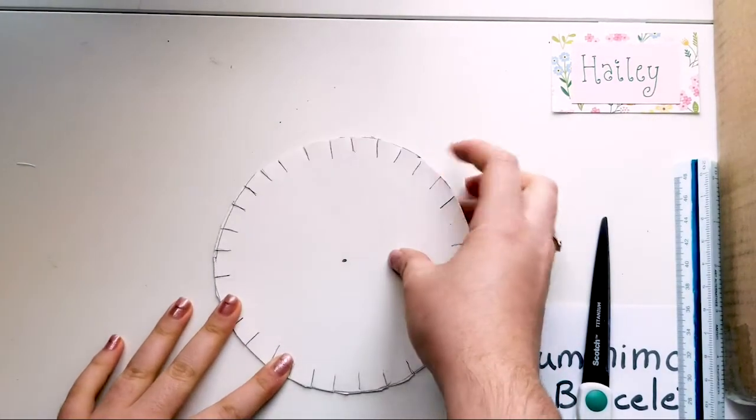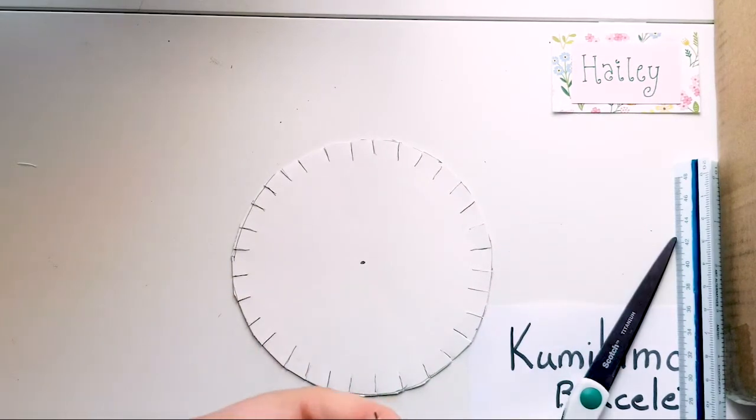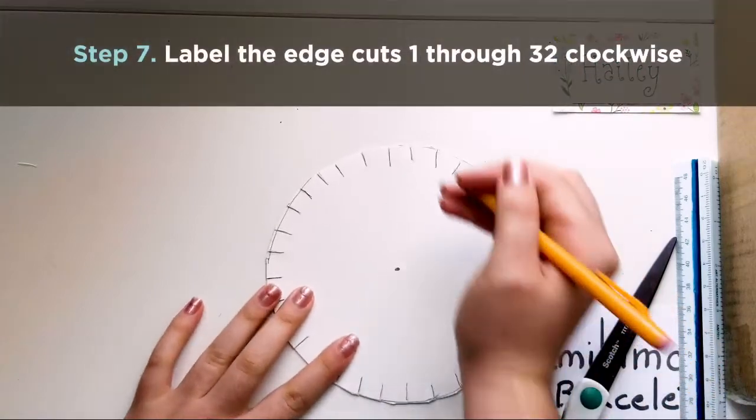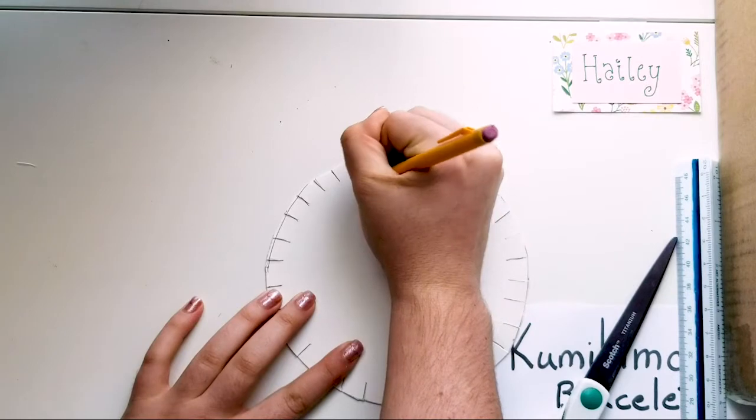So I just went around the circle and I cut all of these little lines. So this is a step that you could do before cutting or after cutting, it doesn't really matter, but you're just going to go around and number all of these little lines all the way up to 32.